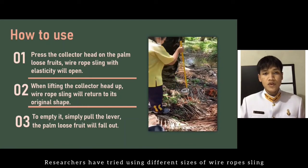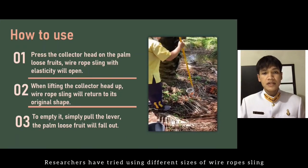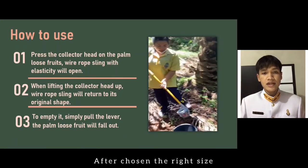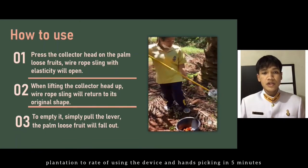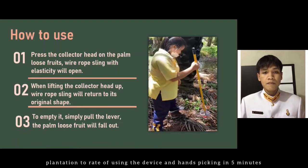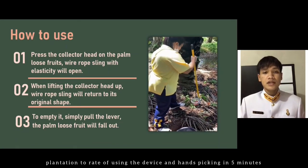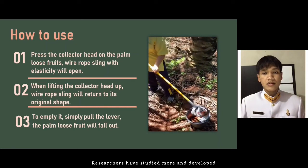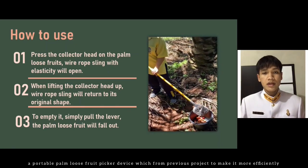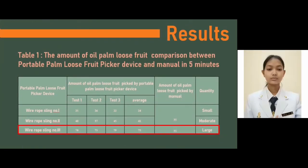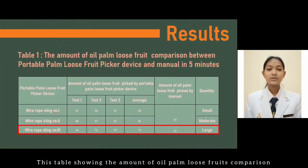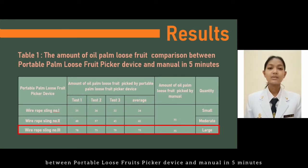Researchers tried using different sizes of wire rope sling. After choosing the right size, we conducted a few trials in our palm plantation to test the effectiveness of using the device, picking in 5 minutes. Researchers then studied further and developed a portable palm loose fruit picker device from the previous project to make it more efficient. This table shows the amount of oil palm loose fruit collected, comparing the portable loose fruit picker device and manual picking in 5 minutes.